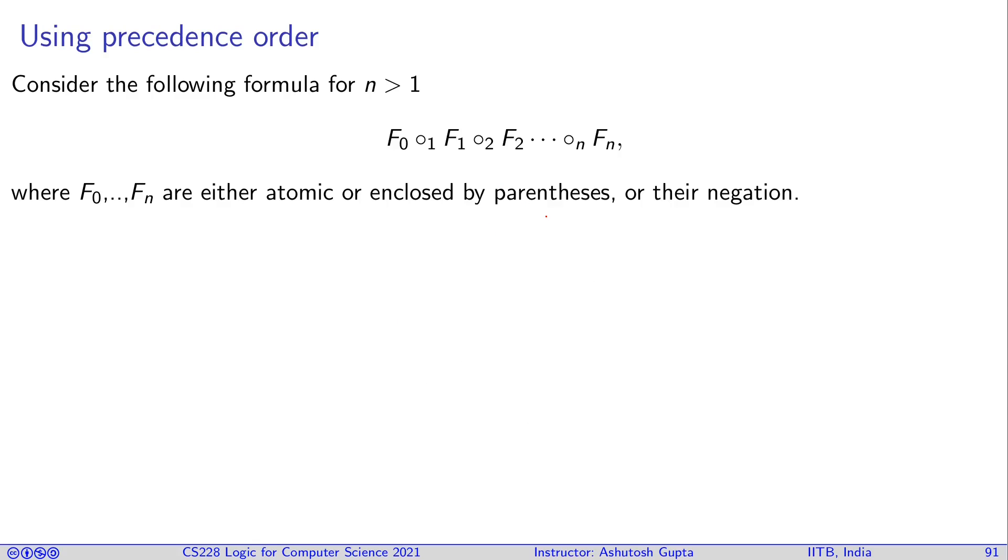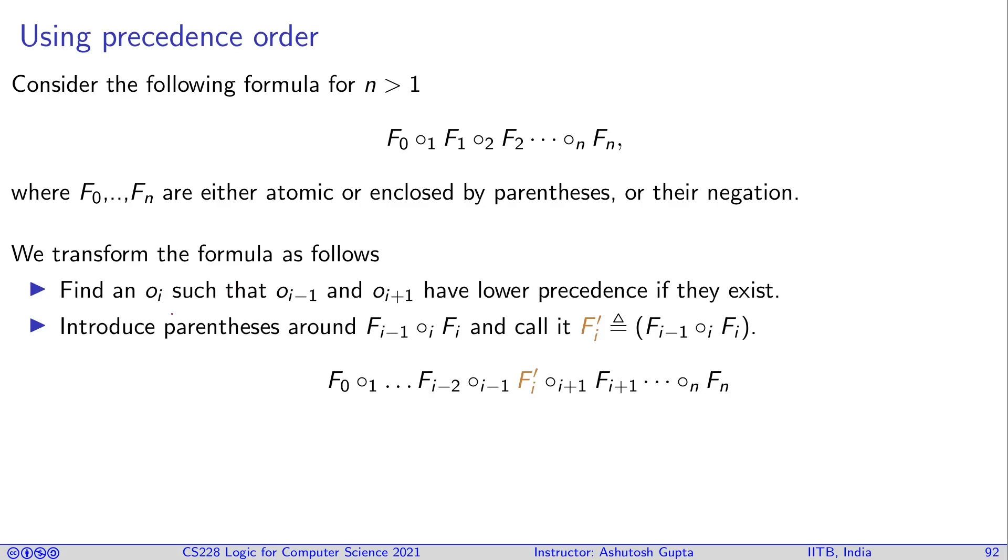So if you have precedence order, then how do you go about parsing a formula? We introduce all the missing parentheses back in and then use normal parsing. You look at the formula and find the sequence where you have a formula, a binary symbol, then the formula, and so on. You find a binary symbol such that its neighbors have lower precedence, then you can put parenthesis around it.